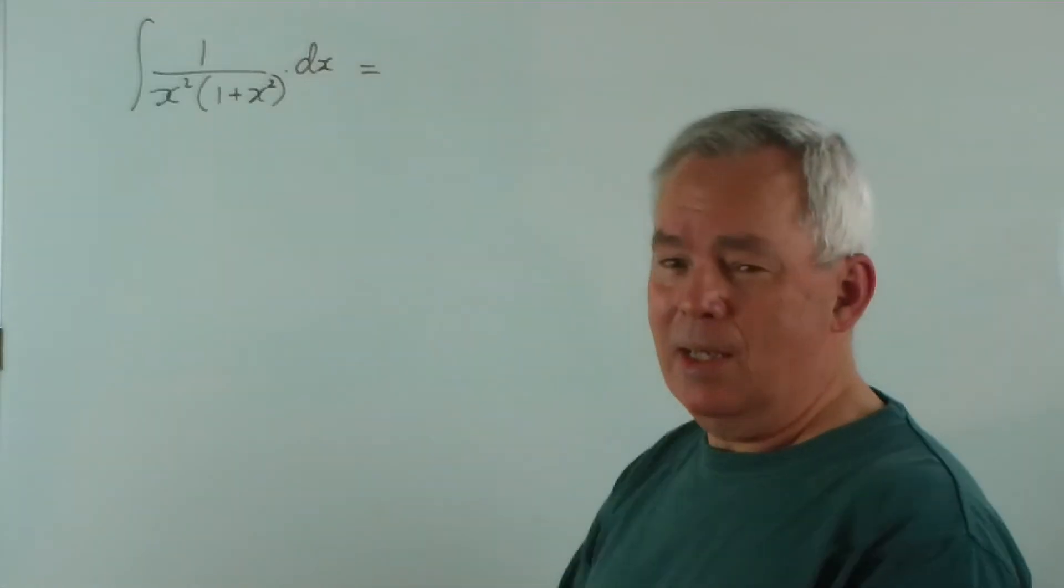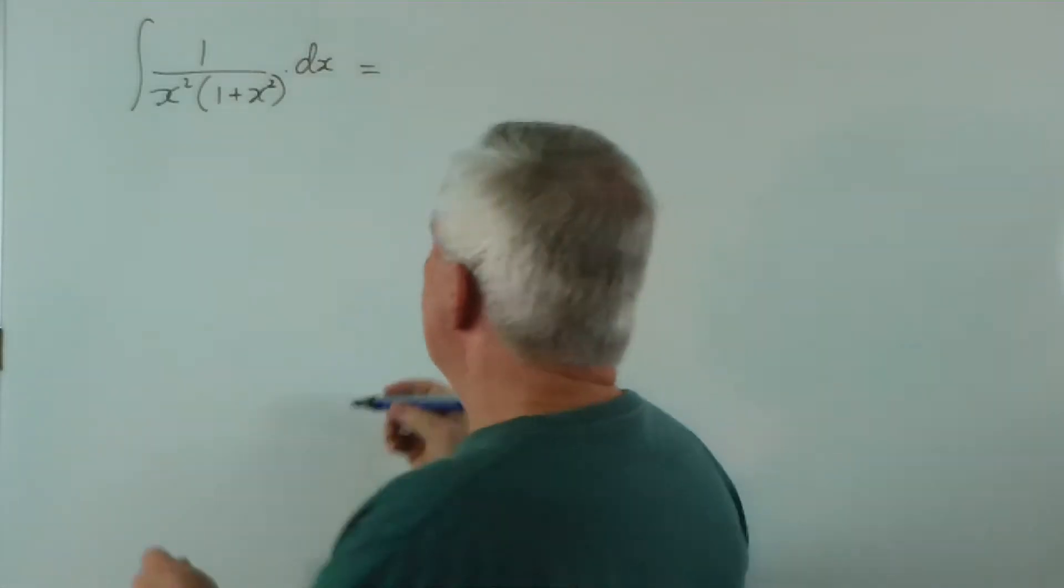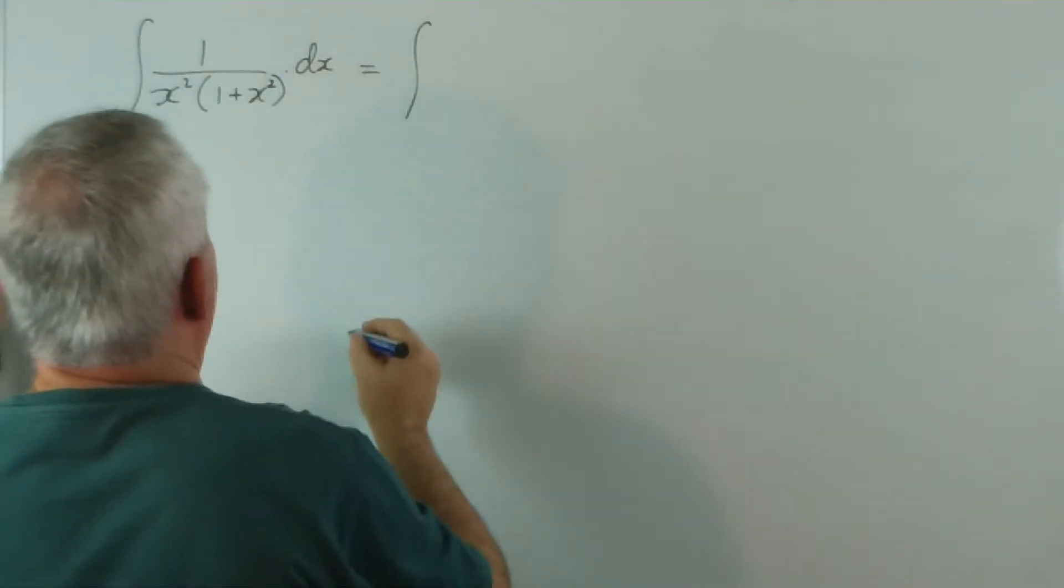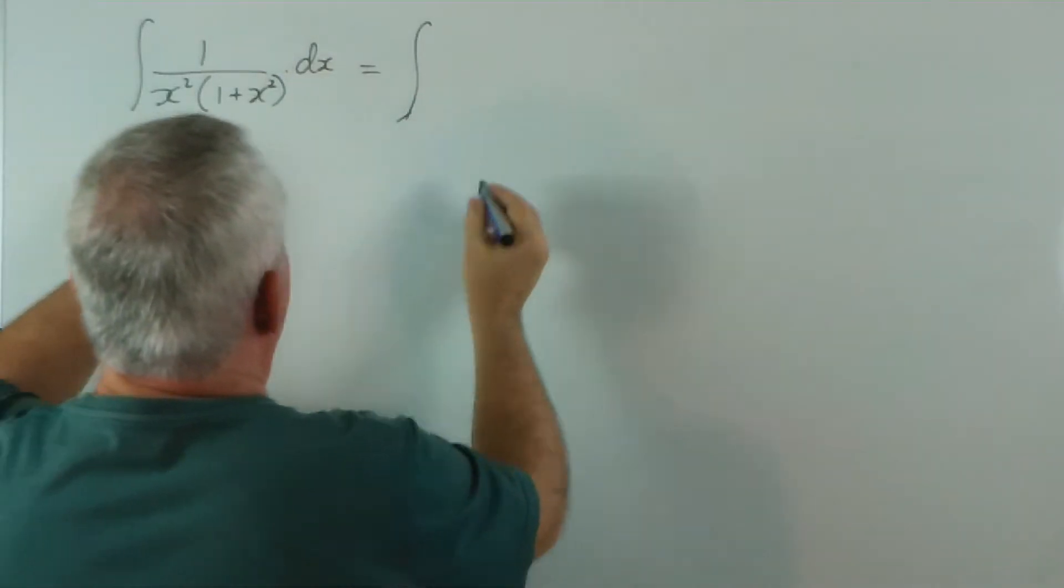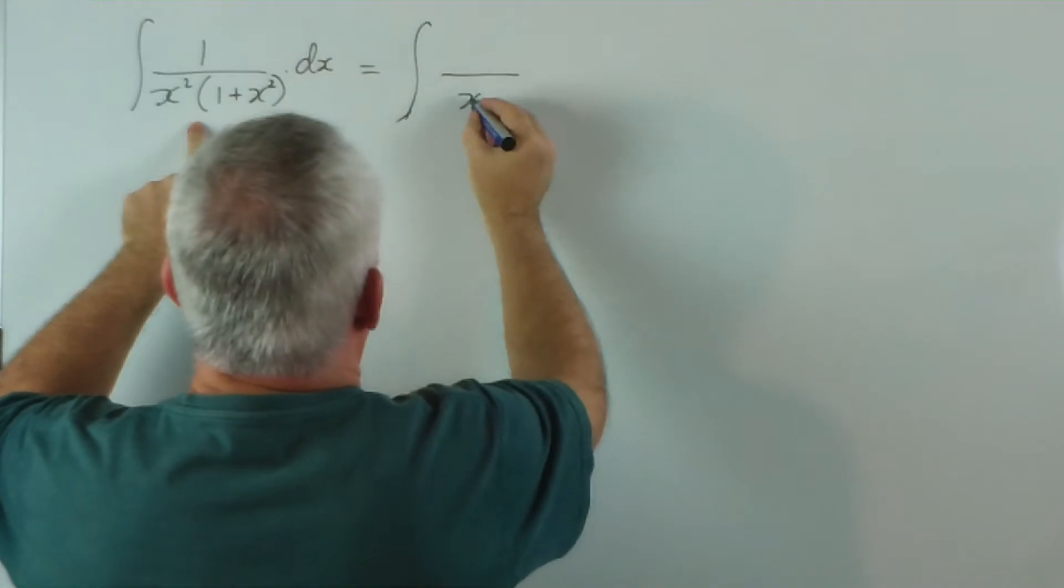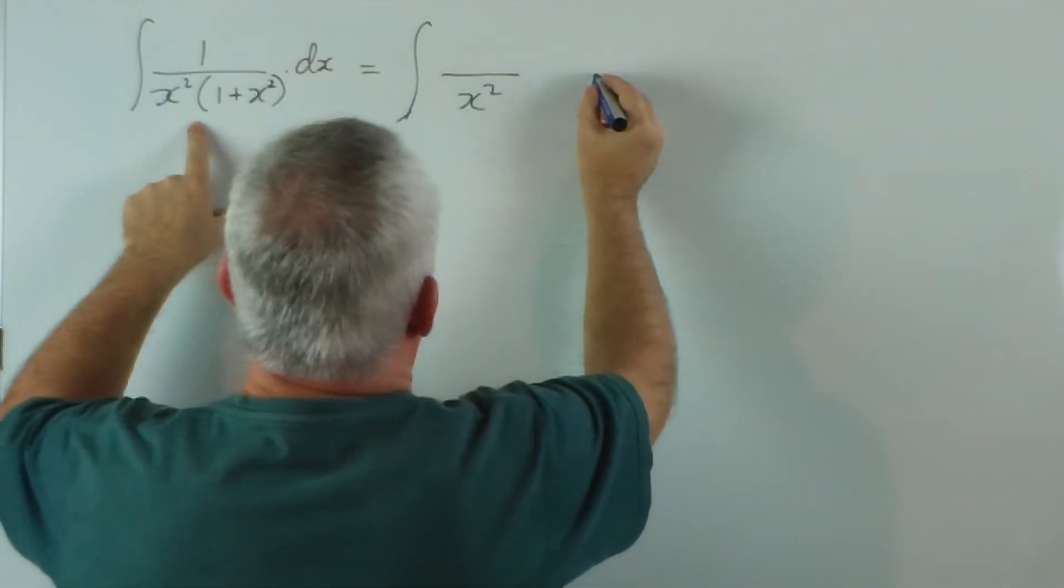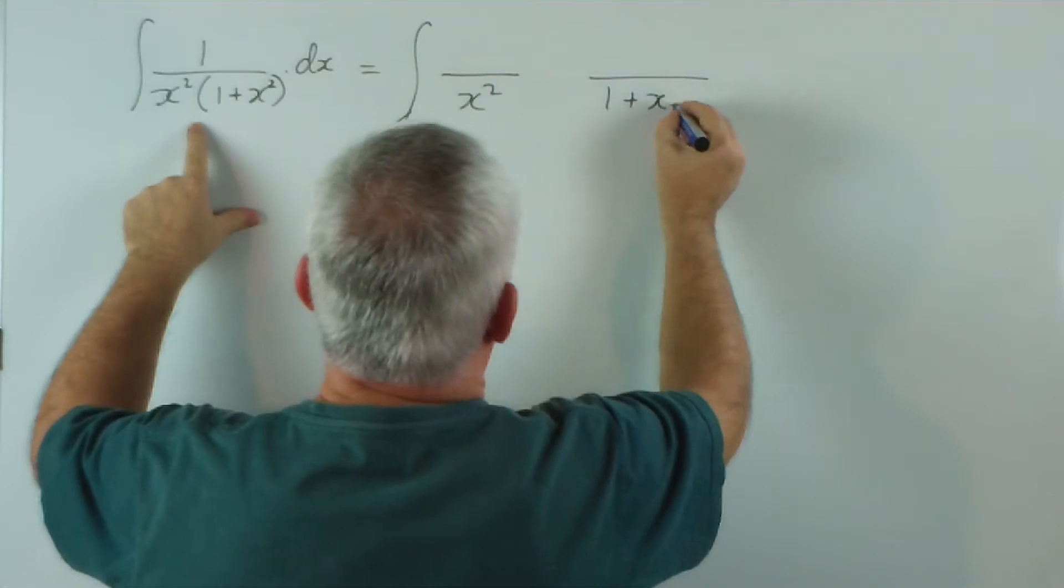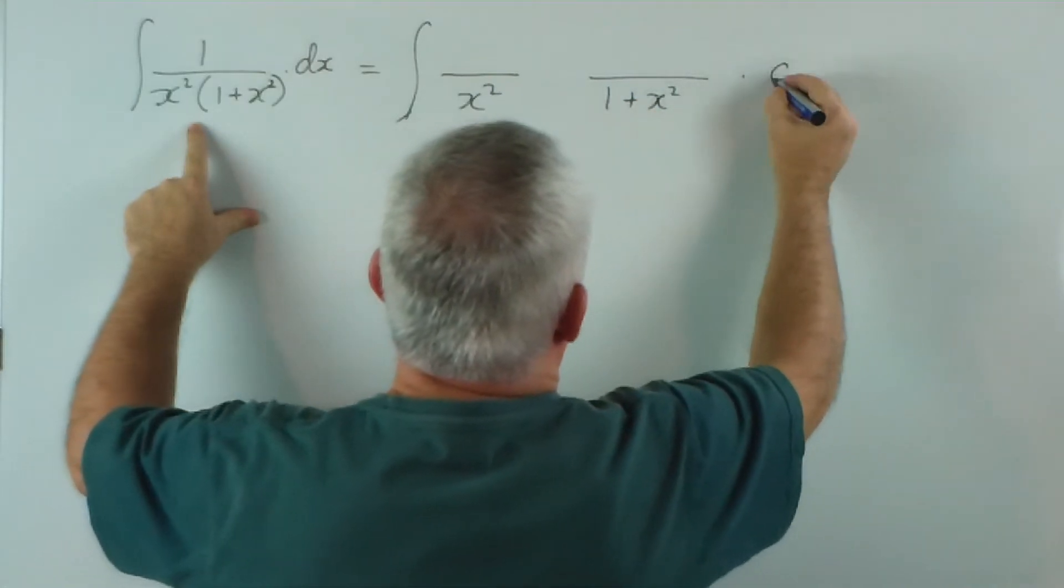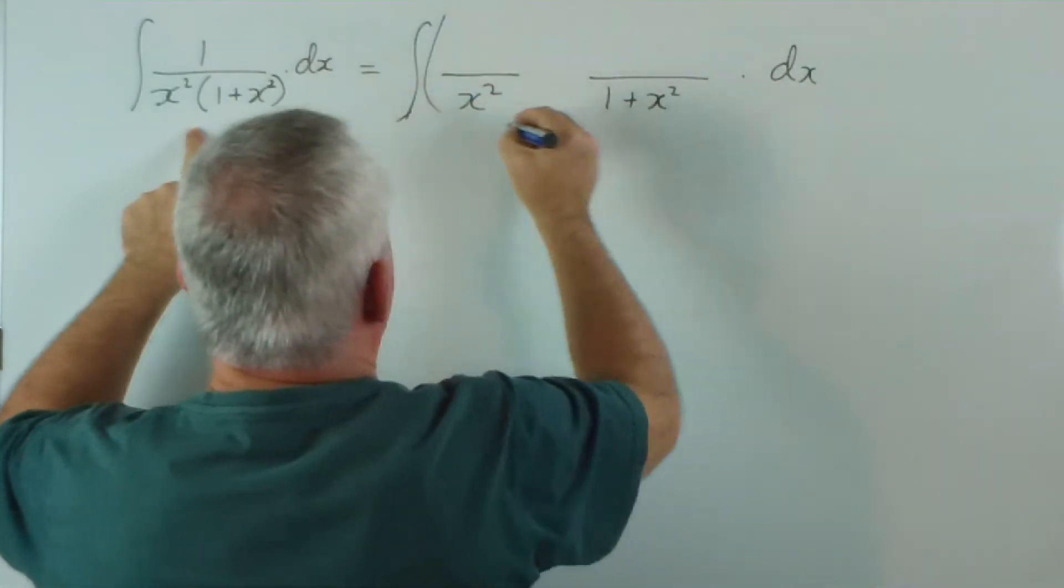It's almost begging us to integrate using partial fractions. So we separate this into two fractions. So we're going to have something over x squared and something over dx. So let's just get that set up.